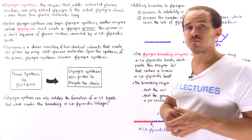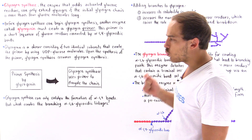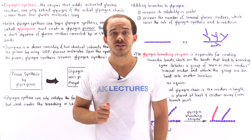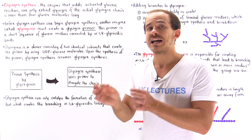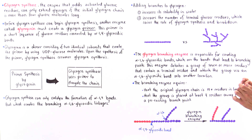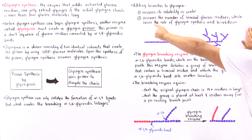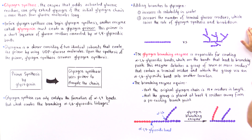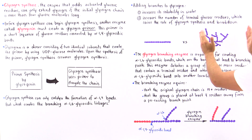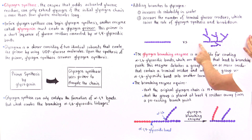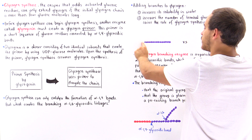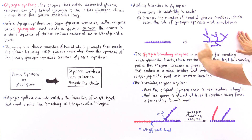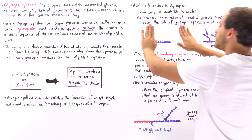Another important benefit of adding branching points is it increases the rate at which glycogen synthesis and breakdown takes place. Glycogen breakdown and synthesis occurs on the terminal non-reducing residues of that polymer. Adding branches increases the number of terminal glucose residues, which raises the rate of synthesis and breakdown. If we compare a linear polymer to a branched polymer, we see many more terminal non-reducing glucose residues in the branched case, so the rate of synthesis and breakdown is much higher.